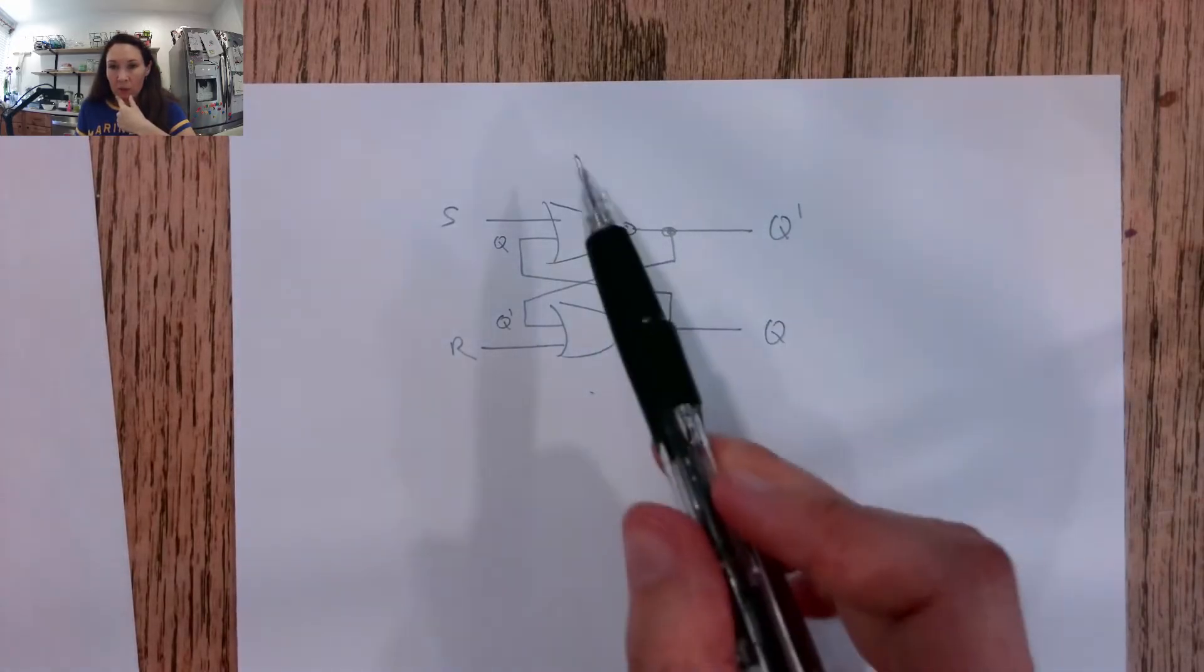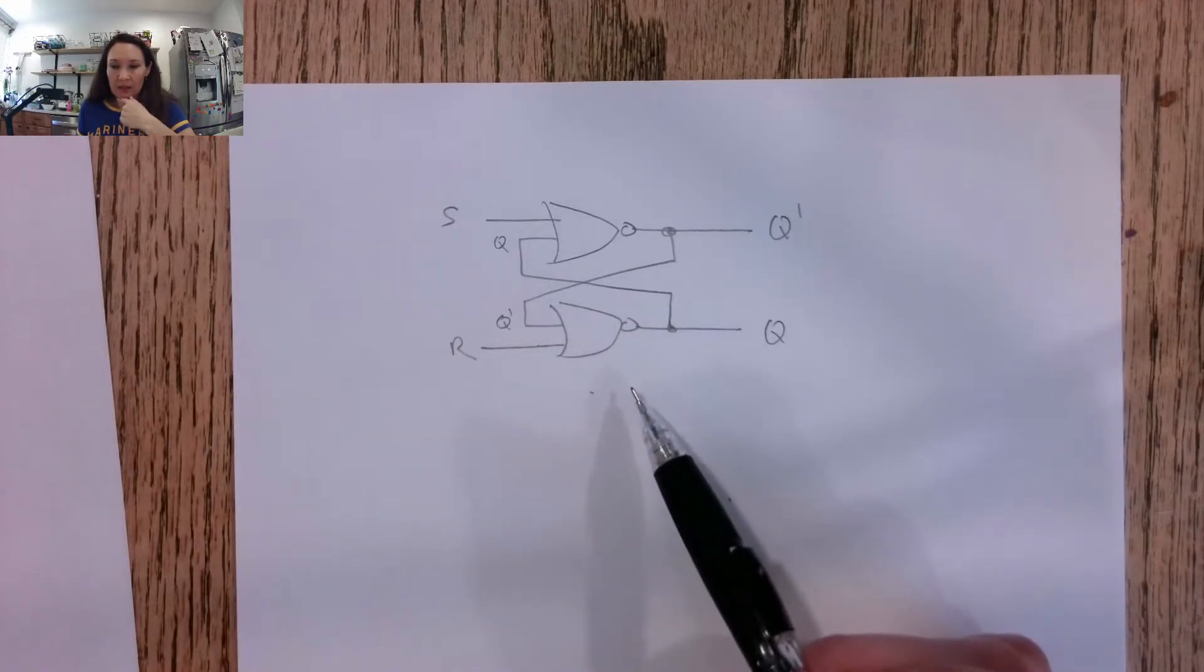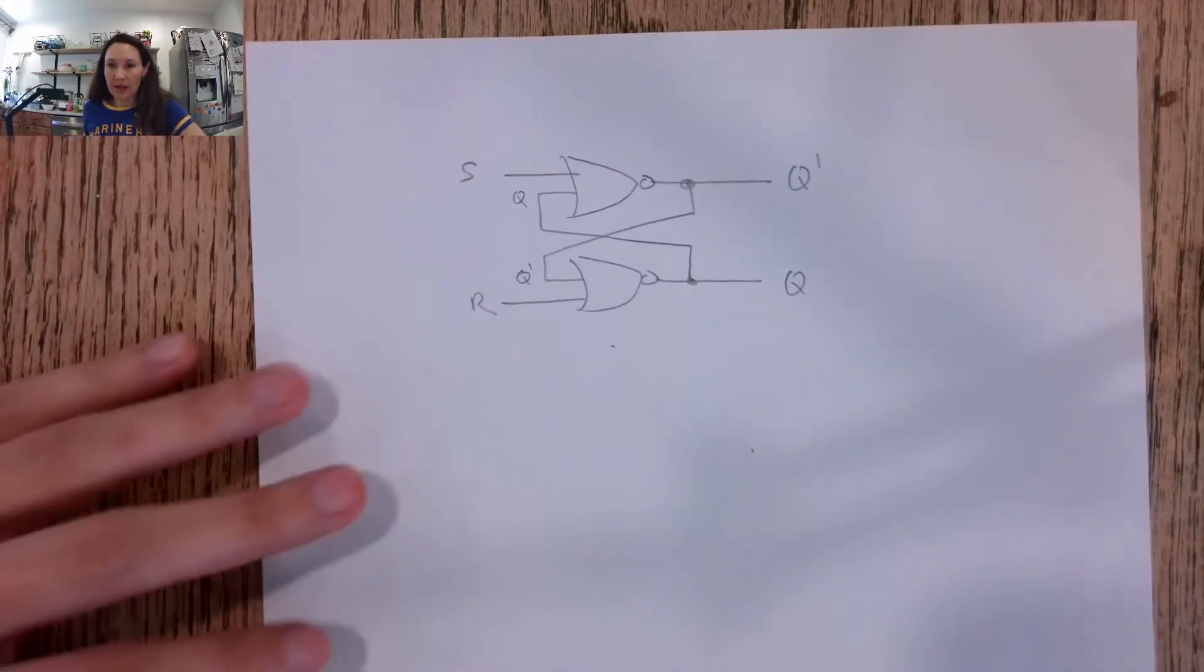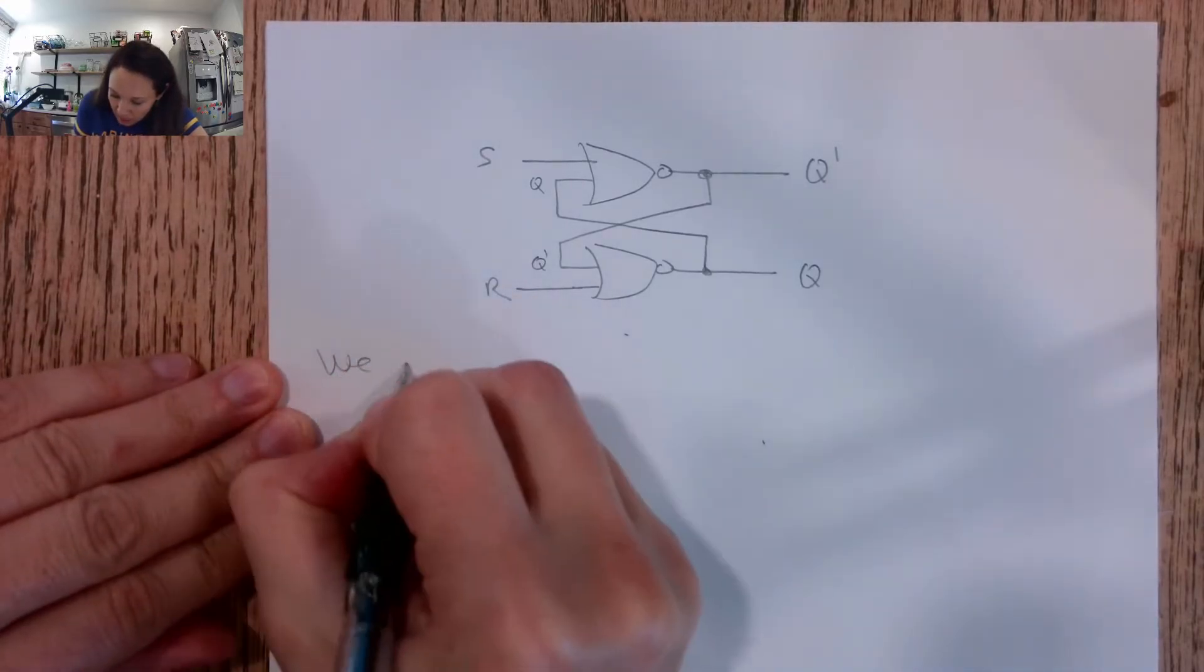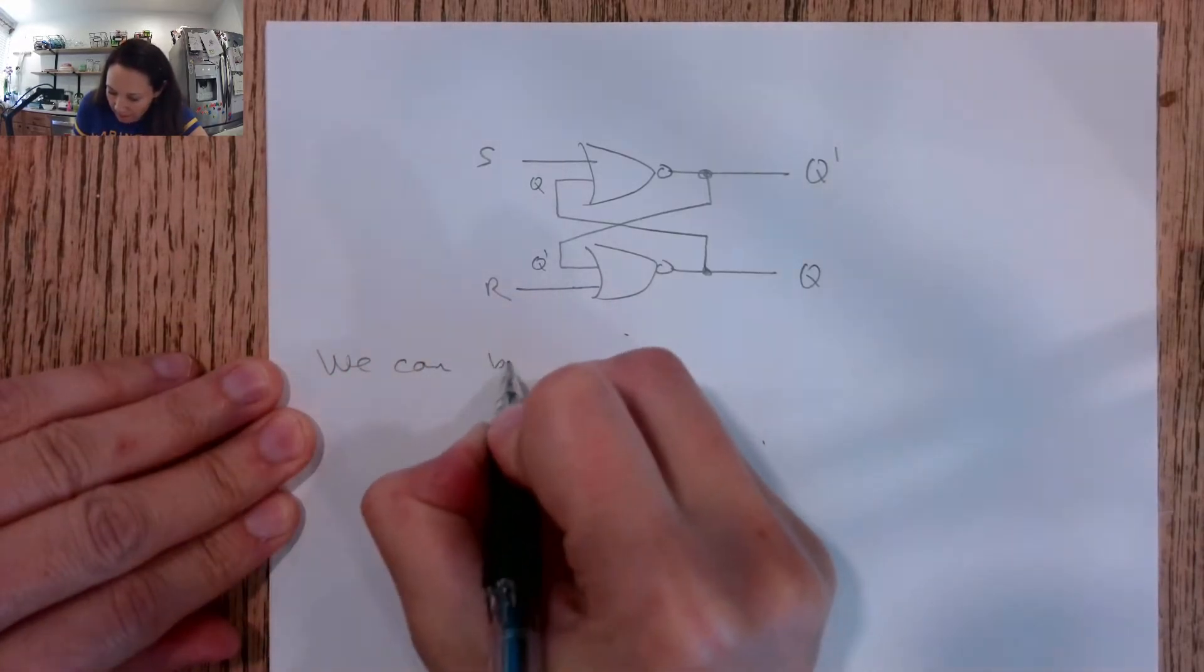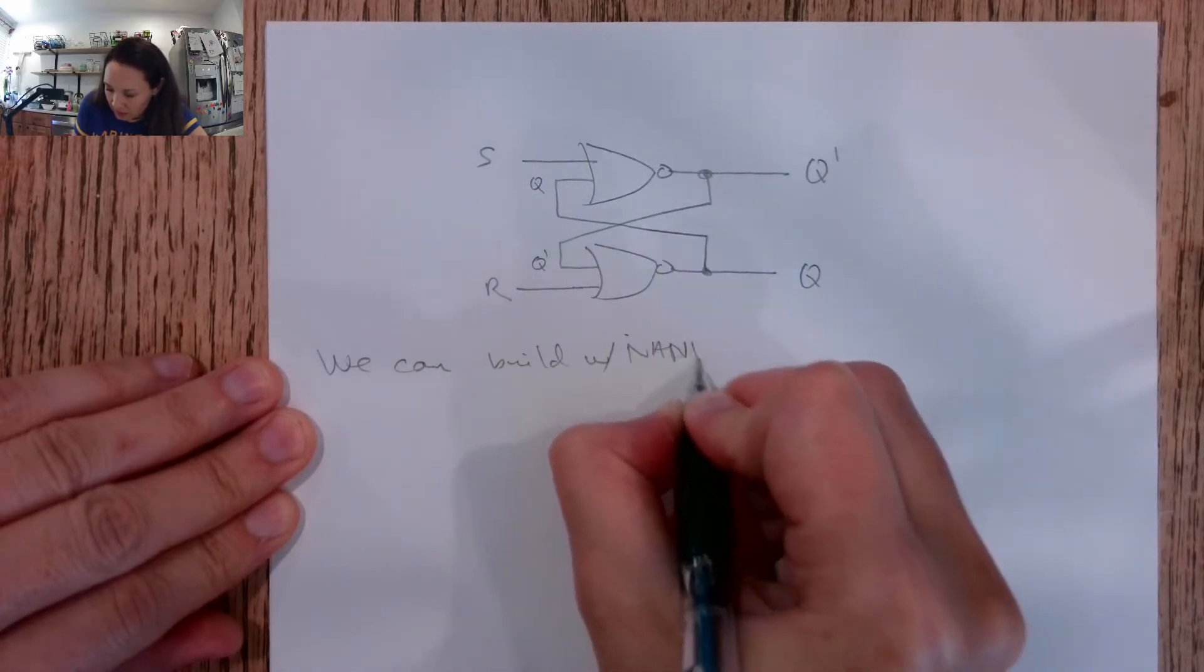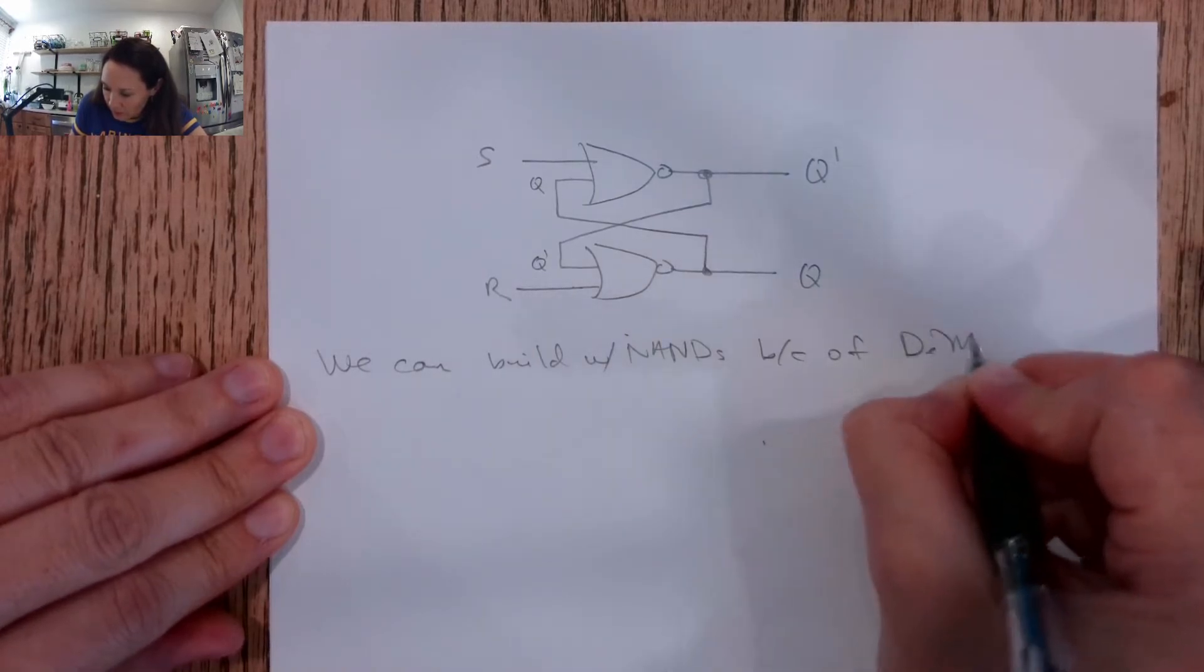We can make this SR latch with two NORs like this, or we can also make this with two NANDs. And the reason why that works basically boils down to applying De Morgan's theorem. We can build with NANDs because of De Morgan's.